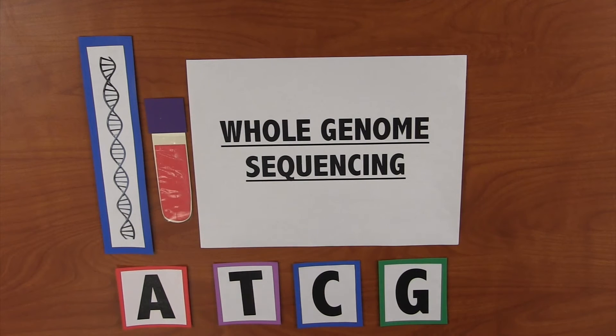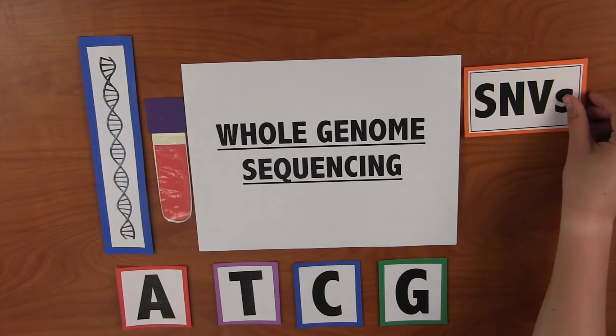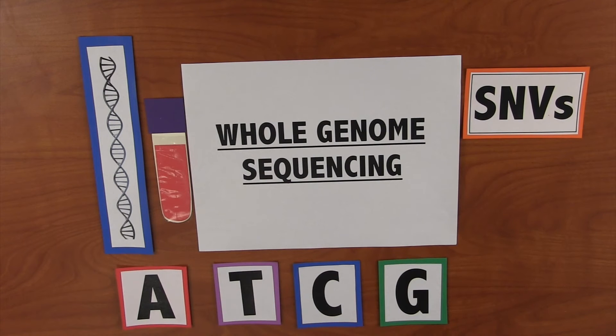WGS allows for a large comprehensive discovery of variants in someone's DNA. These variants could consist of single nucleotide variants, or SNVs, in which just one letter is mutated or erroneous. With over 3 billion other base pairs in your DNA, this may seem like not a big deal, but these tiny little changes in your DNA pattern can have huge effects, which is why it's important to identify them.